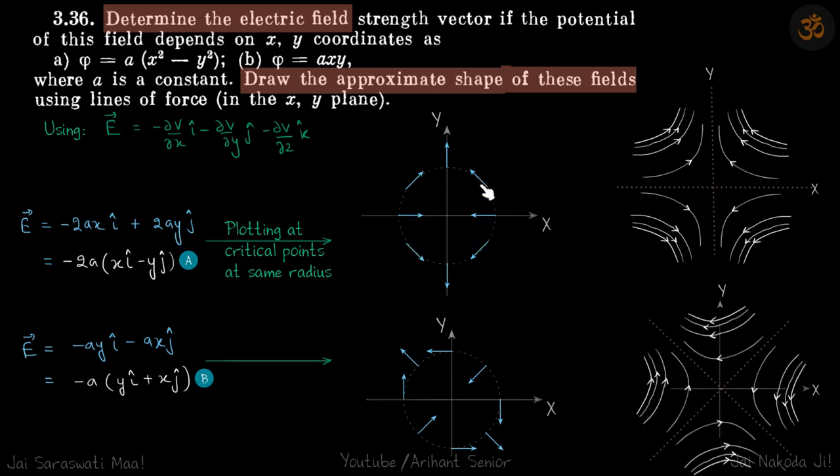Similarly, you can plot all these small fields at these points. You can see that it's symmetrical about x axis and y axis. And field seems to be coming like this and going in this direction and going up. Here it's going like this, here it's going like this, here it's going like this.